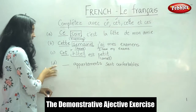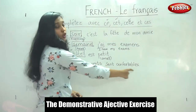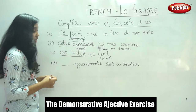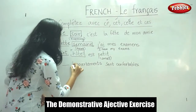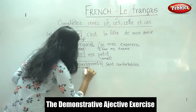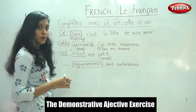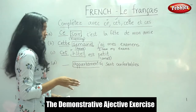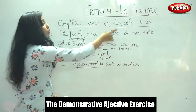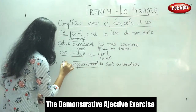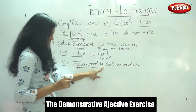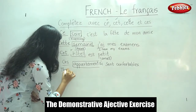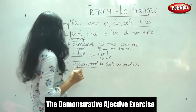And finally the last sentence: dash appartements sont confortables — dash apartments are comfortable. The noun after the blank is 'appartements'. It is in the plural form. So what would we write? We would write 'ces'. Ces appartements sont confortables — these apartments are comfortable.